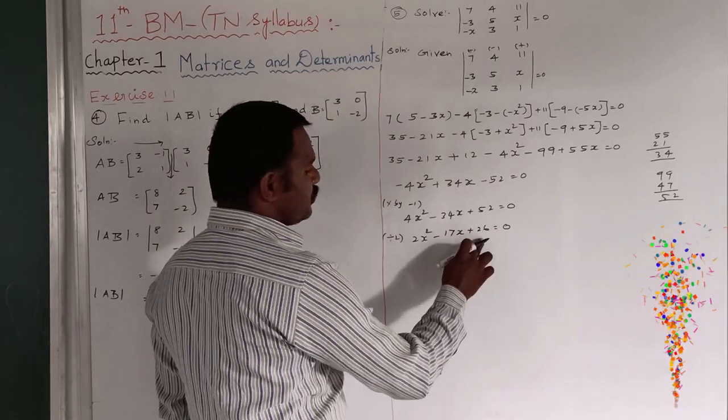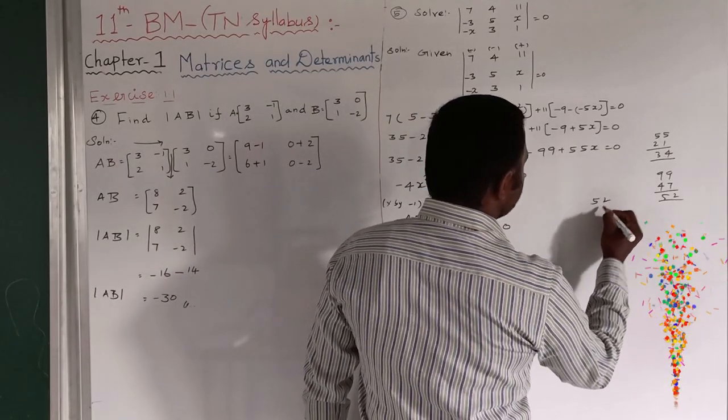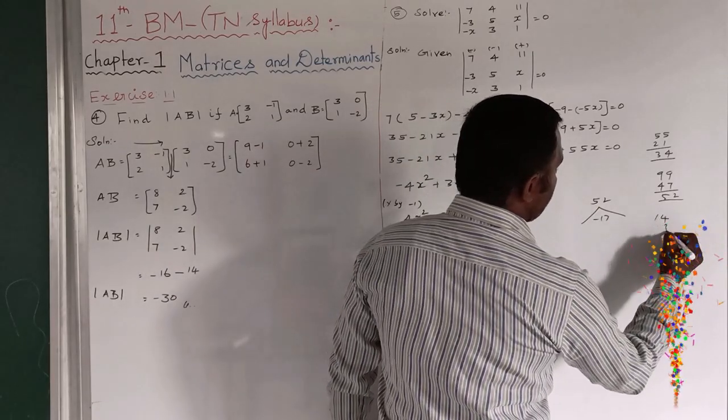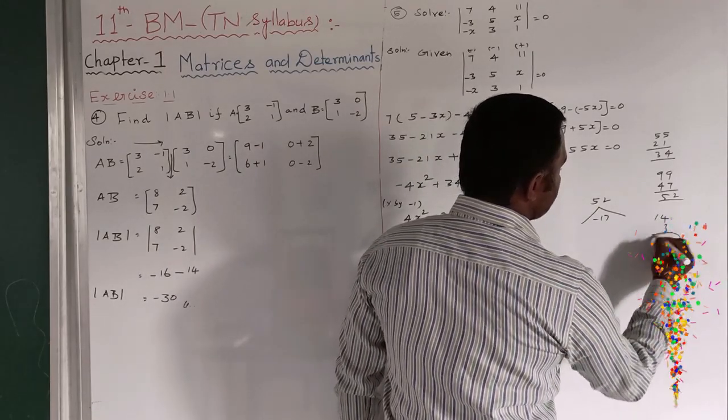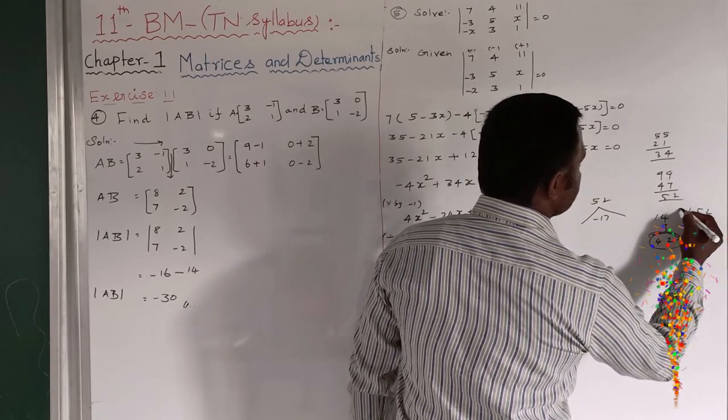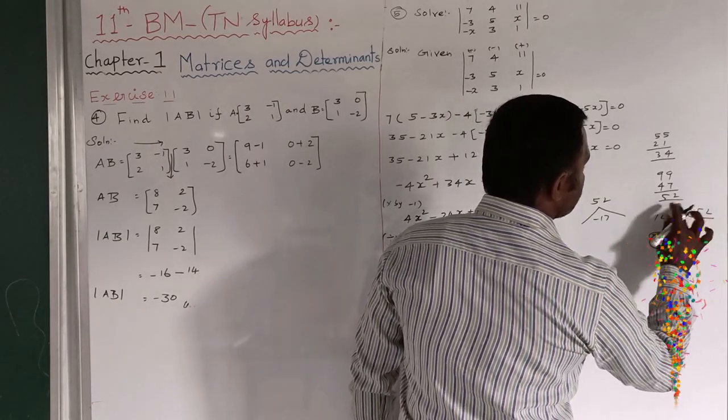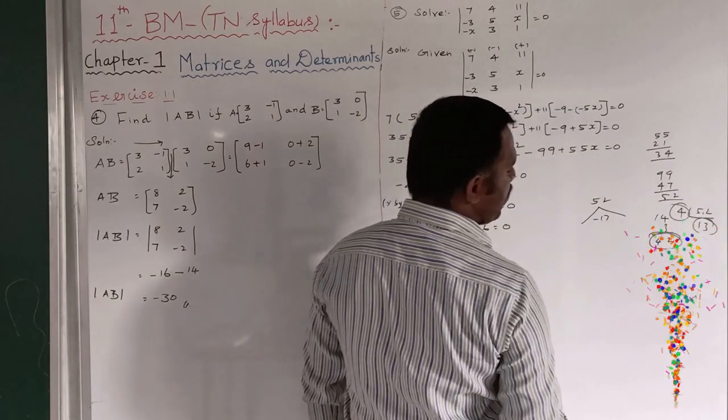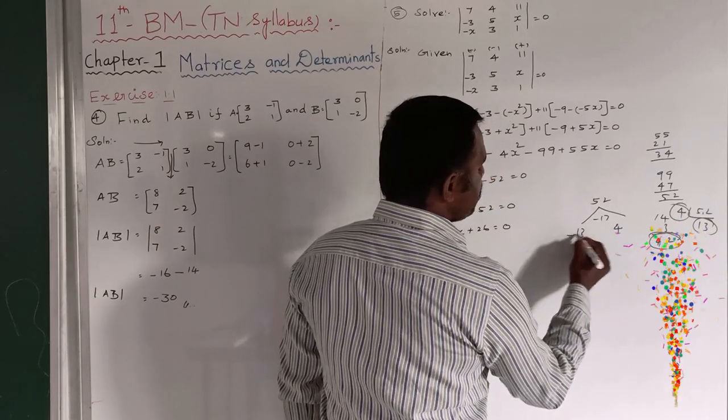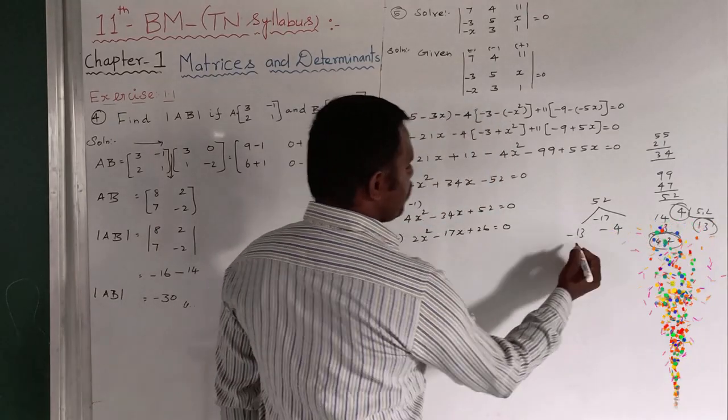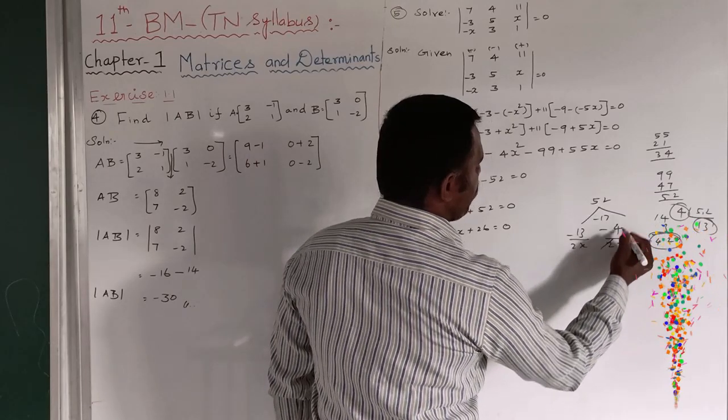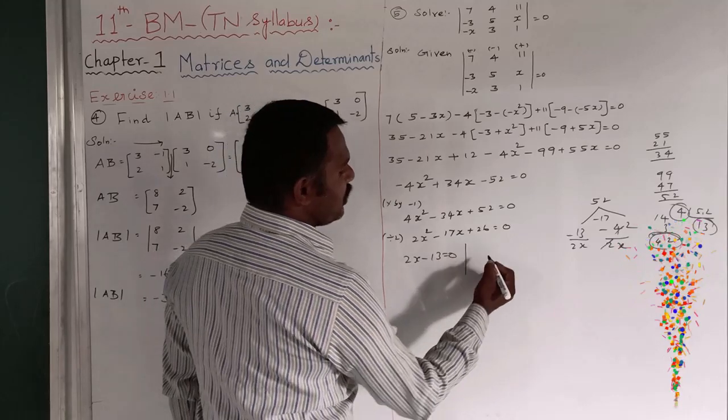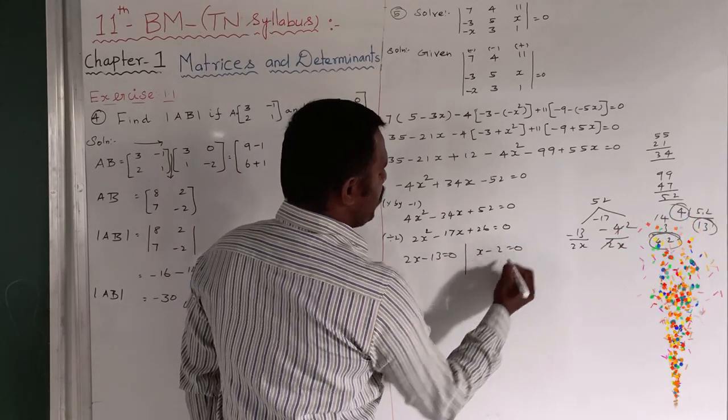So, I want to factorize these two terms. 2 twos are 52. And remaining is minus 17. So, 14, 3s are 12. Balance 1. 42. When I want to take the LCM 3 or otherwise 4 means 1 4 is 4. 3 4 is 12. 13 4s are 13 into 4. It is a minus minus. Divide by 2X. 1 2 is 2 twos are 4. So, 2X minus 13 equal to 0. And X minus 2 equal to 0.